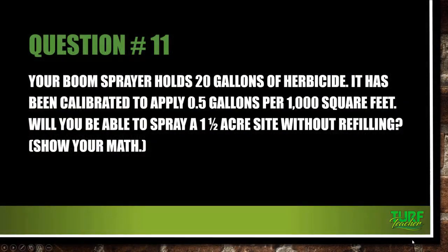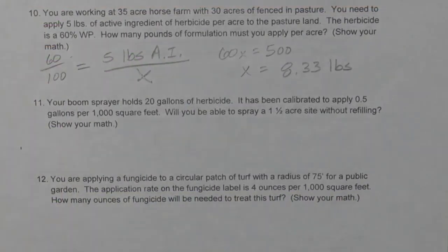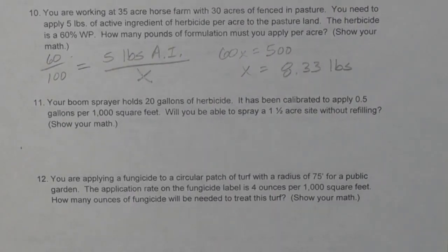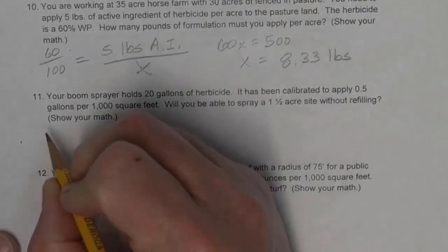Question number eleven: your boom sprayer holds 20 gallons of herbicide and has been calibrated to apply half a gallon per 1,000 square feet. Will you be able to spray a one-and-a-half acre site without refilling? This is a yes or no answer, but we're going to do the math. We have 20 gallons and half a gallon per 1,000 square feet.